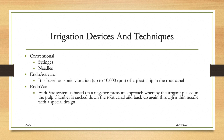Next is irrigation devices and techniques. The conventional technique is syringe and needles — the solution is loaded into the syringe and delivered into the canal via a needle. Improvements include side-venting needles, which deliver solution through the sides instead of the tip, and thinner gauge needles that are more flexible and can be placed deeper for easier flushing of debris. The endo activator is based on sonic vibration of a plastic tip in the root canal. The endovac is a negative pressure system placed in the pulp chamber that creates negative pressure at the apex to remove irrigant.